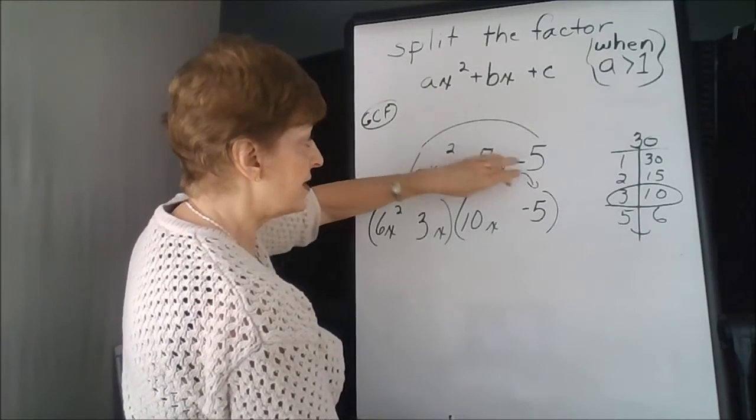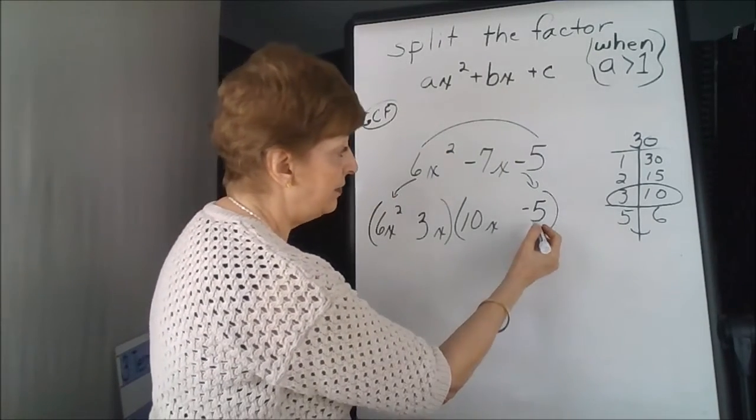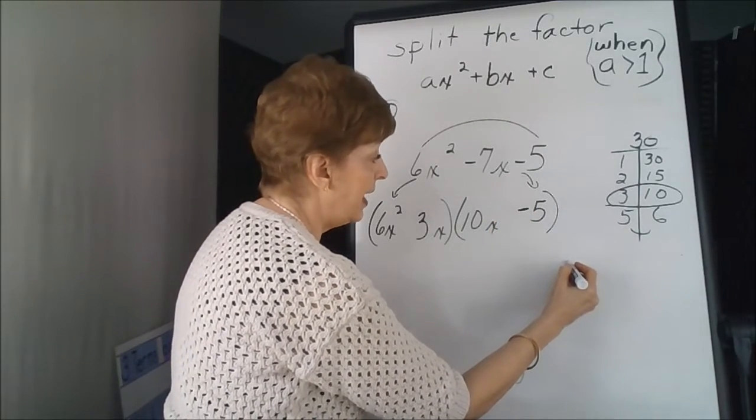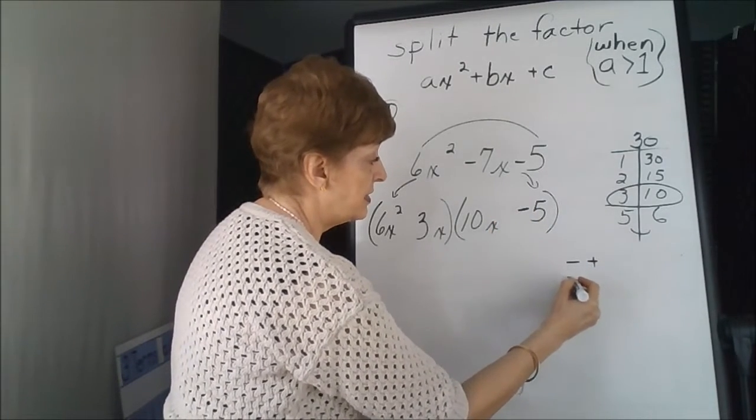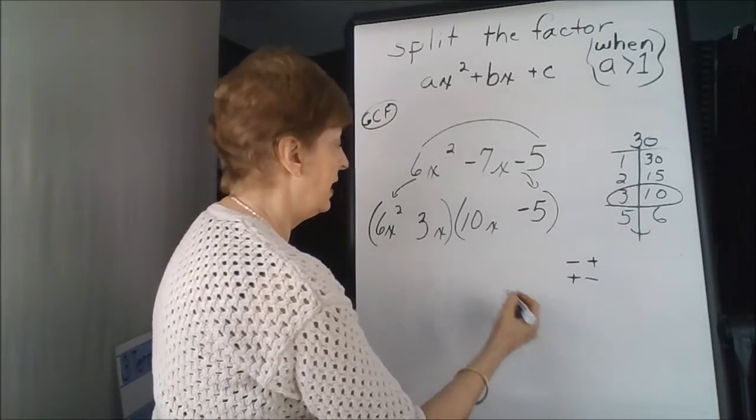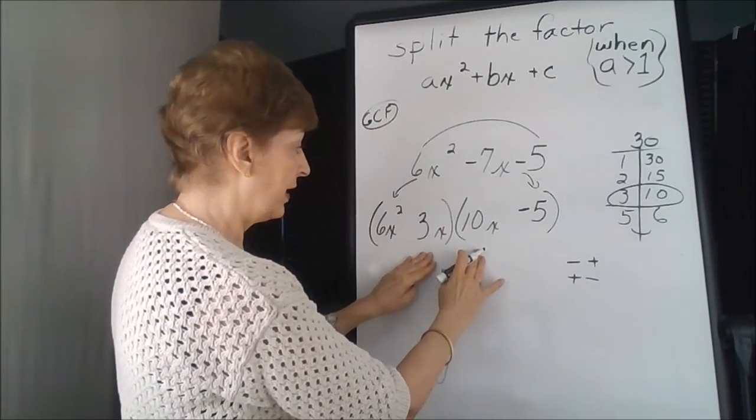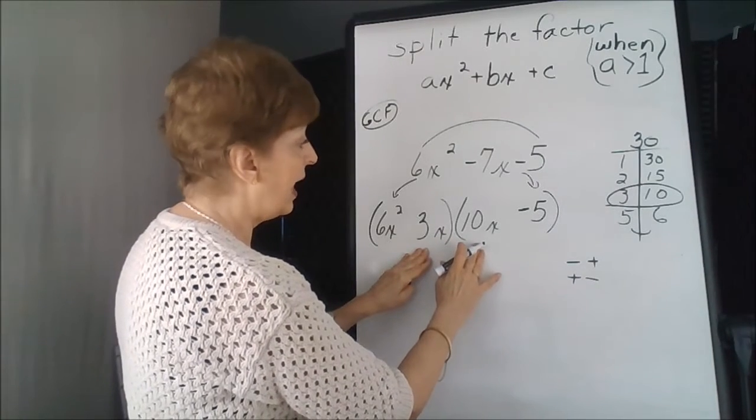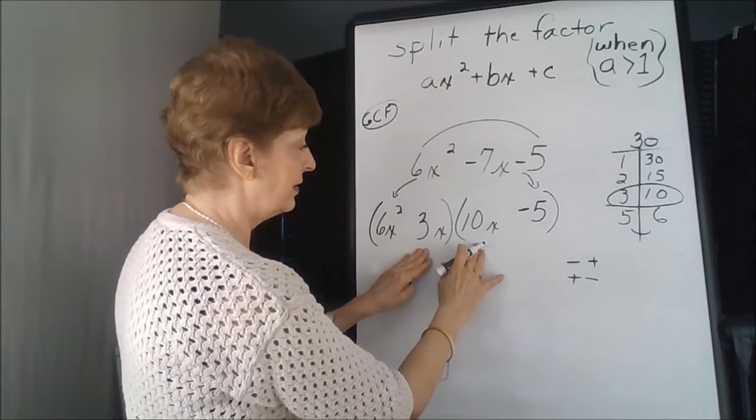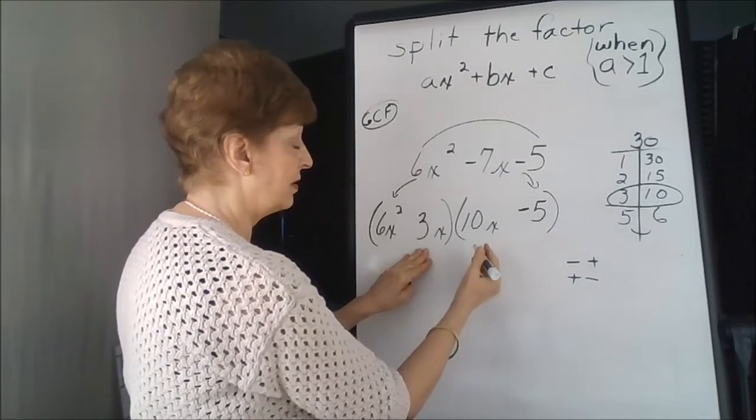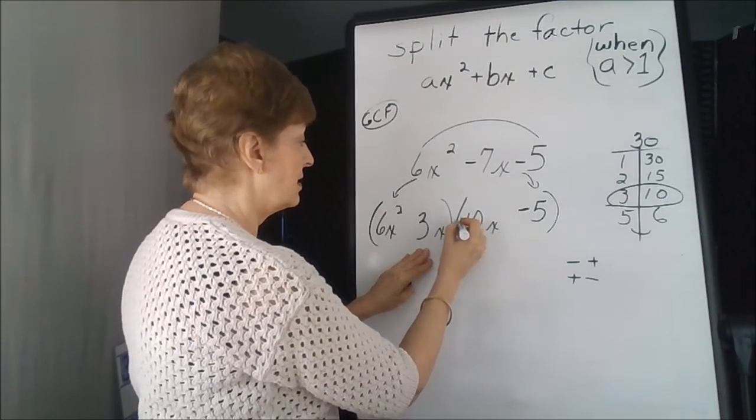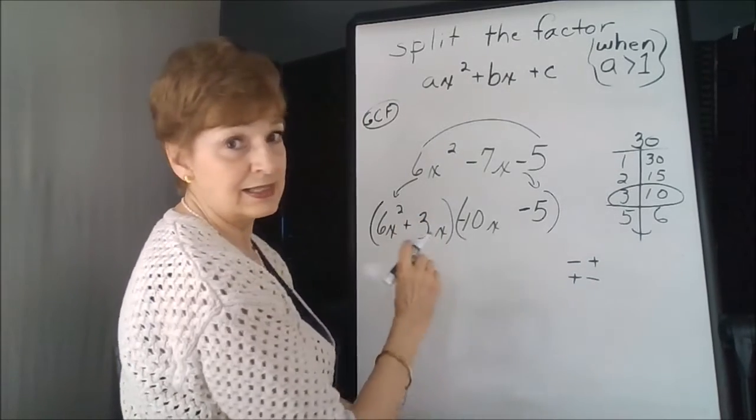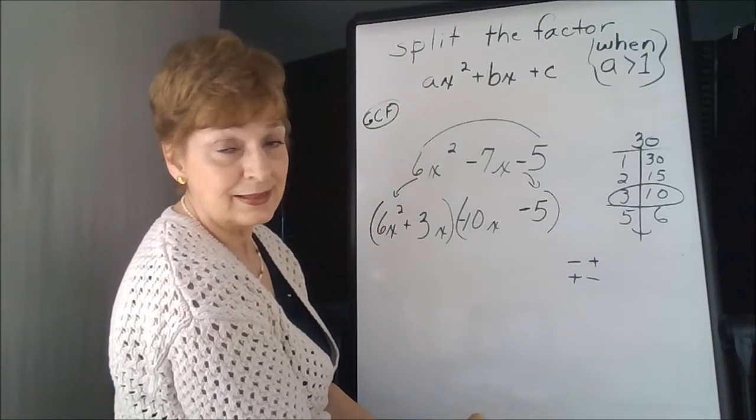Now we're going to look at our signs. We have to have a negative last term. The only way we can get that is different signs. And we need a negative 7 with a 3 and a 10. So the larger numeral has to be negative in order to give us a negative 7 when we subtract. So negative, positive. That's my best guess at this point.